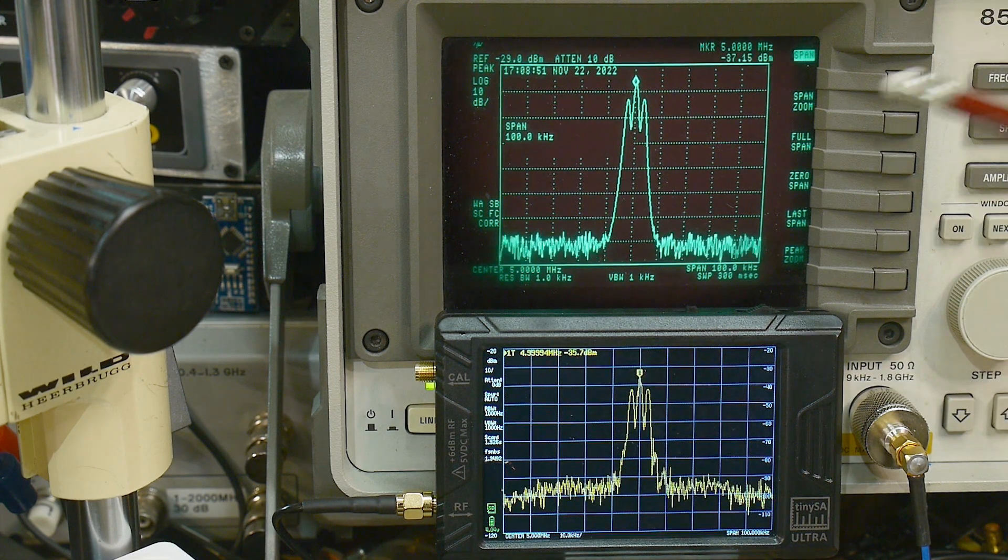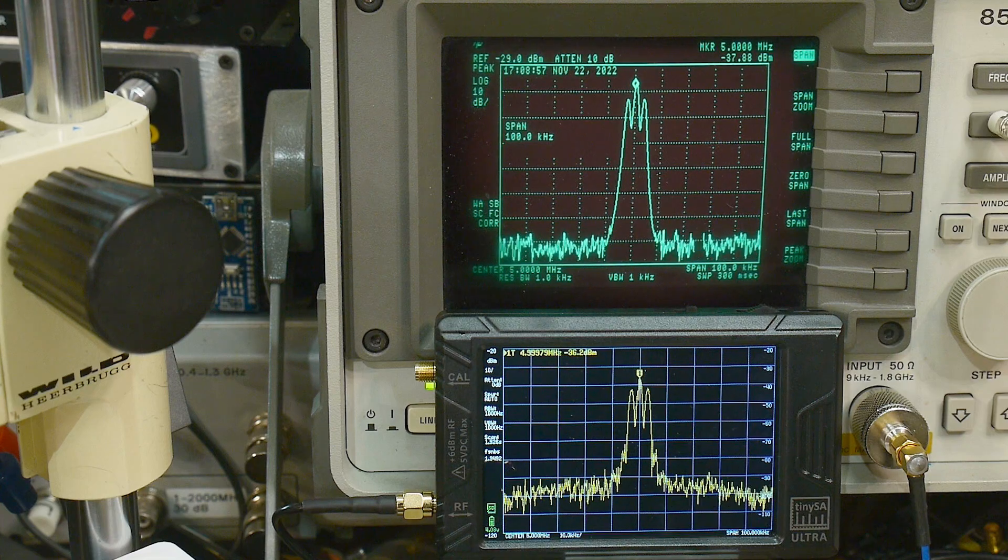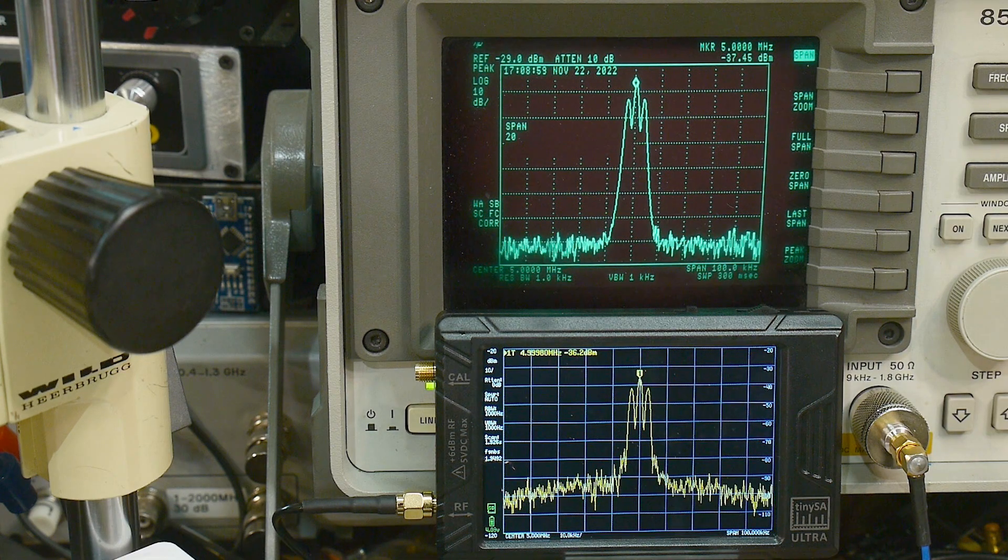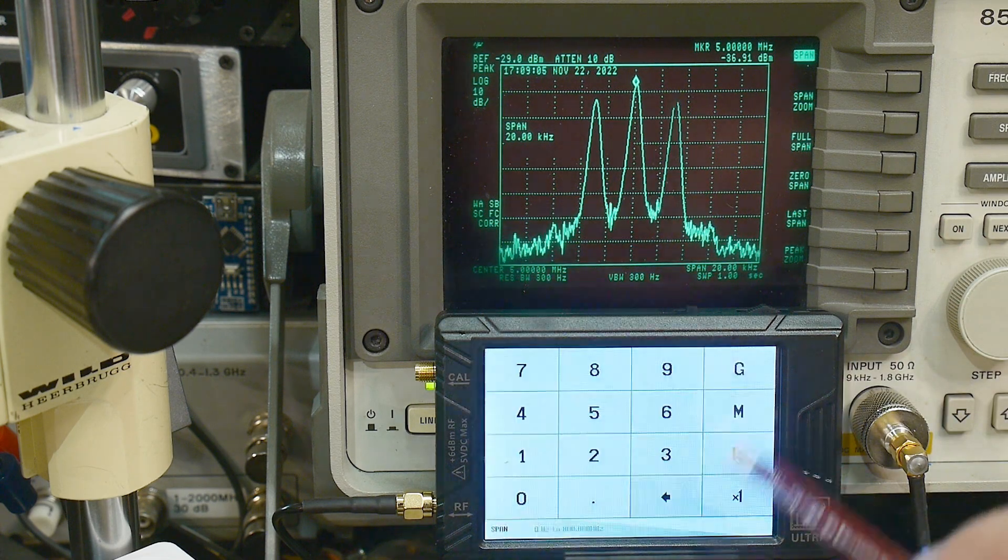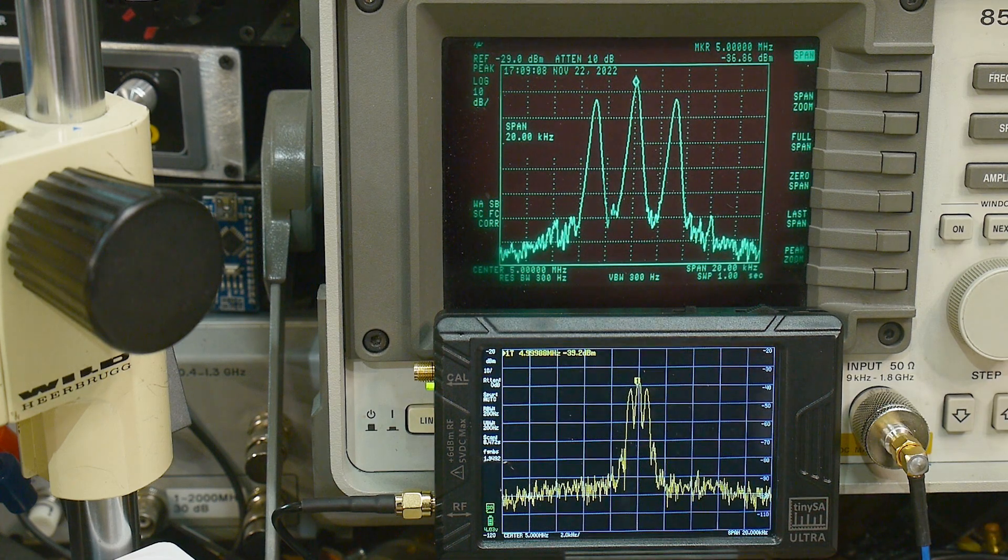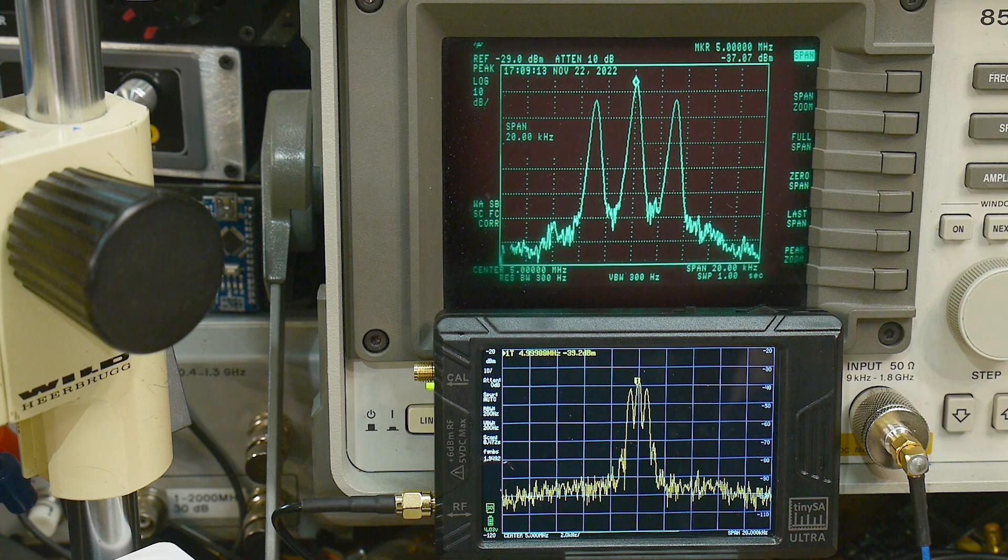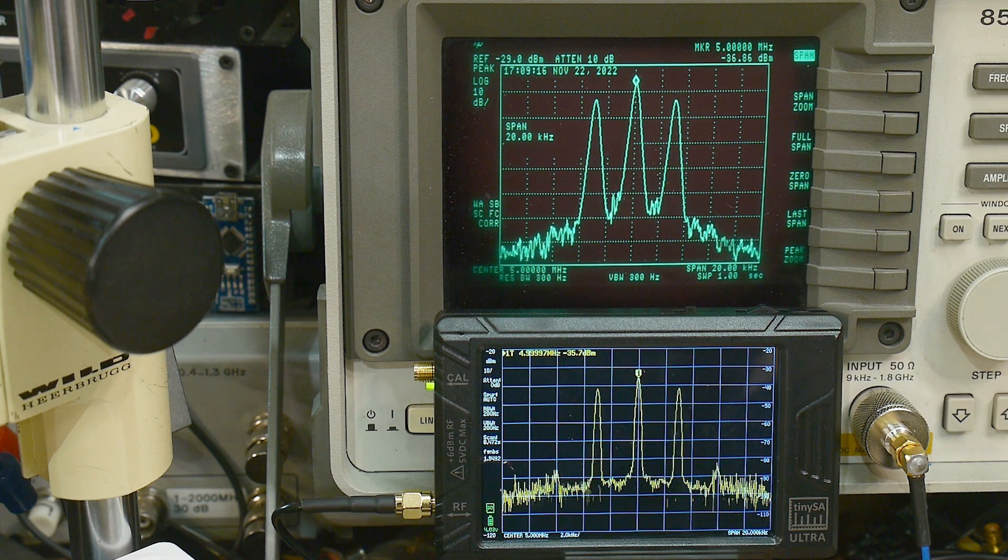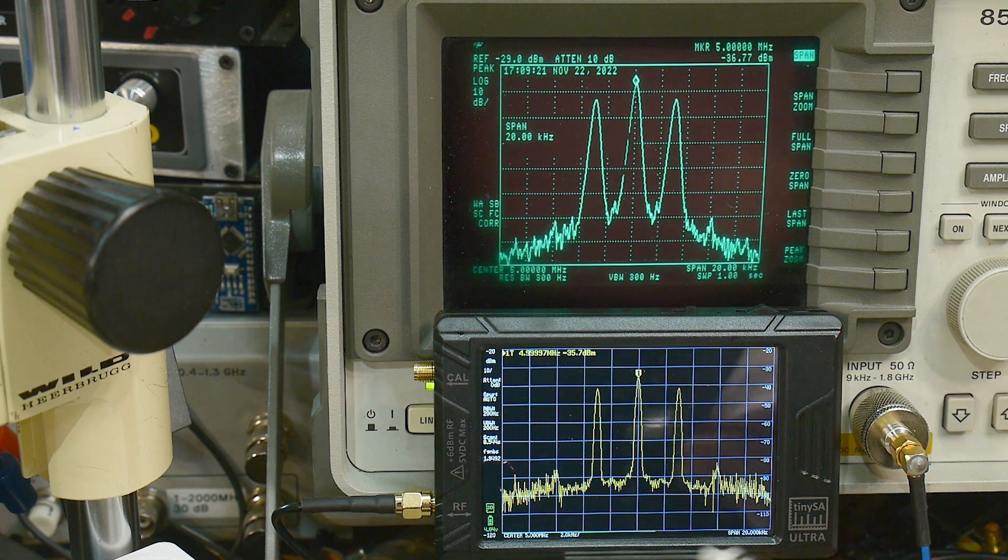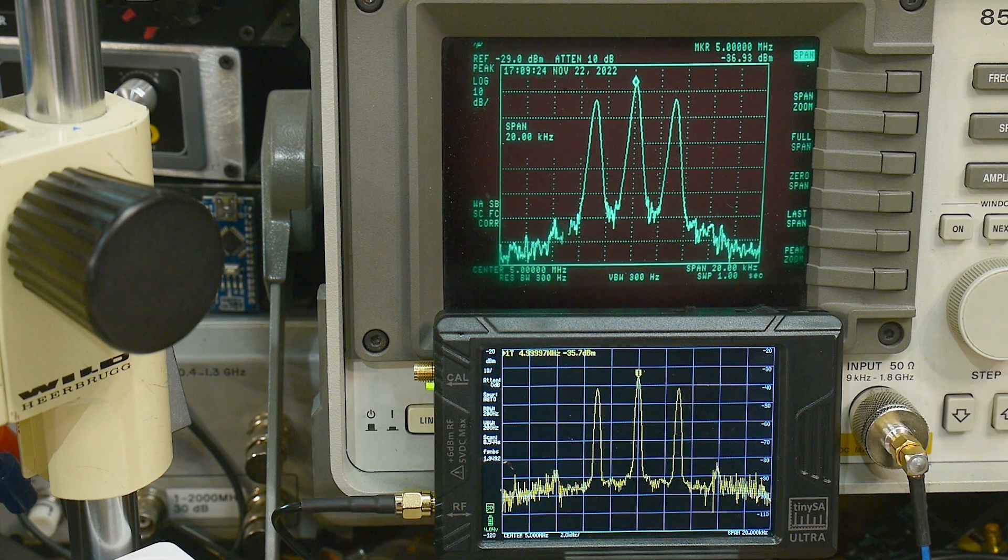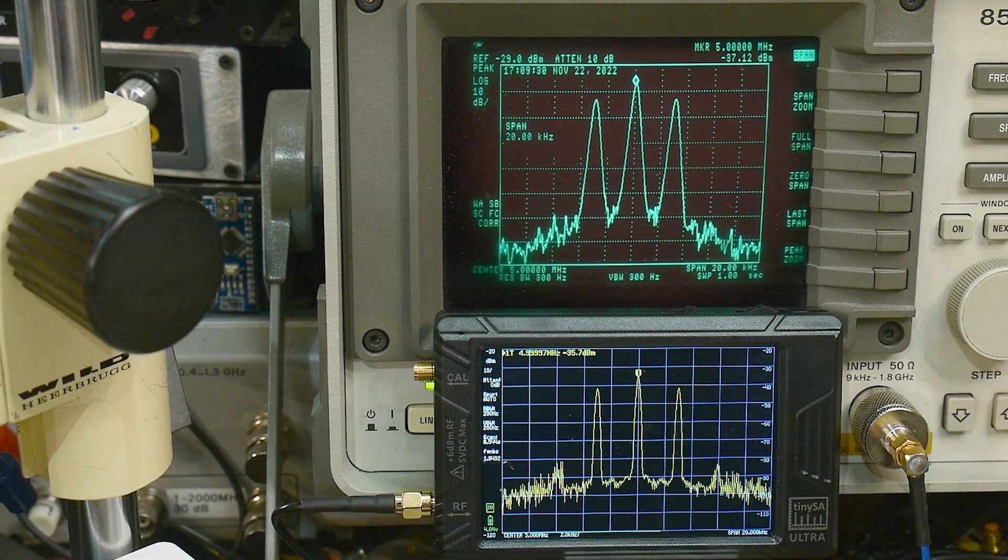Let's zoom in farther. Let me do a span of 20 kilohertz and they're nicely resolved. We'll do 20 kilohertz here too. Now we're sweeping very slow. The filter shape is different but we're seeing about the same thing. The sweep speed is incredibly slow on the microprocessor here.